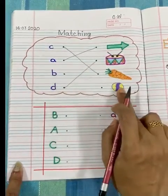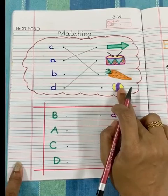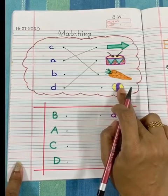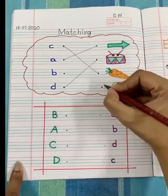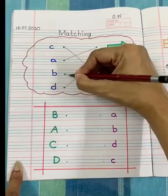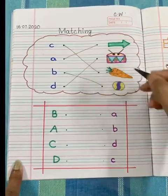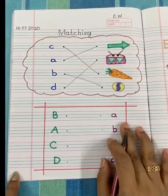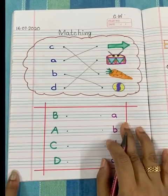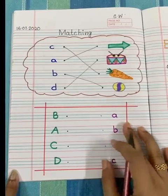Next picture is ball. Which letter has B sound? Ball. Very nice, children. You have done it correctly. Aap ne bhoot achse se activity kiya.